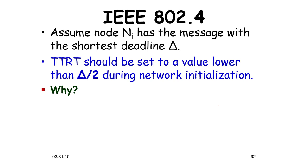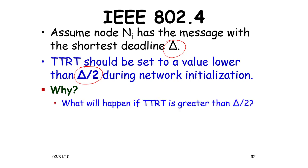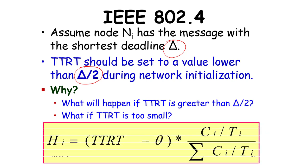Assume node n_i has a message with the shortest deadline Δ. Since 2 × TTRT is the maximum time between two token visits with asynchronous overrun, TTRT should be set to less than Δ/2 so that we can get the token back in time and transmit before the deadline. If TTRT is greater than Δ/2, the token will arrive late and deadlines will be missed.